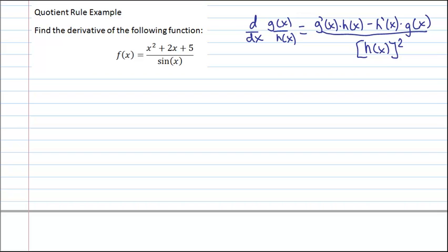So in our function, let's identify what g of x and h of x are. g of x is the numerator, so it will be x squared plus 2x plus 5. Therefore, let's find g prime of x. That will equal 2x plus 2.